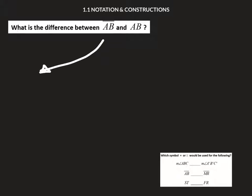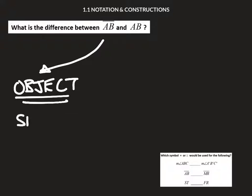This represents an object. So we're actually talking about the physical object here, which would be segment AB. It's talking about the physicality of that.